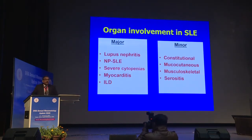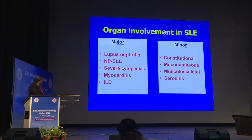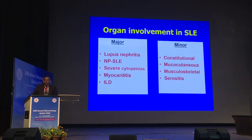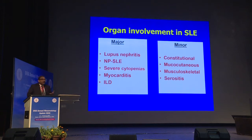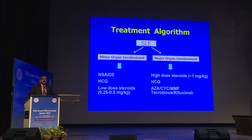Regarding organ involvement — this is arbitrary but from a teaching-learning perspective — major organ involvement includes kidney involvement, neuropsychiatric lupus, severe cytopenias, and cardiopulmonary involvement. But from the patient's perspective, what is classified as minor organ involvement, such as a skin rash on the cheek, may be devastating for a teenager. Please be very circumspect when using the terms minor and major organ involvement. From a clinical perspective, it helps decide the quantum of treatment needed.